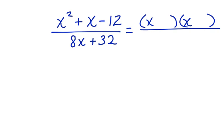We want two terms that add together to give us a 1 and multiply together to give us a negative 12. So that would mean that we have a positive 4 and a negative 3 here.